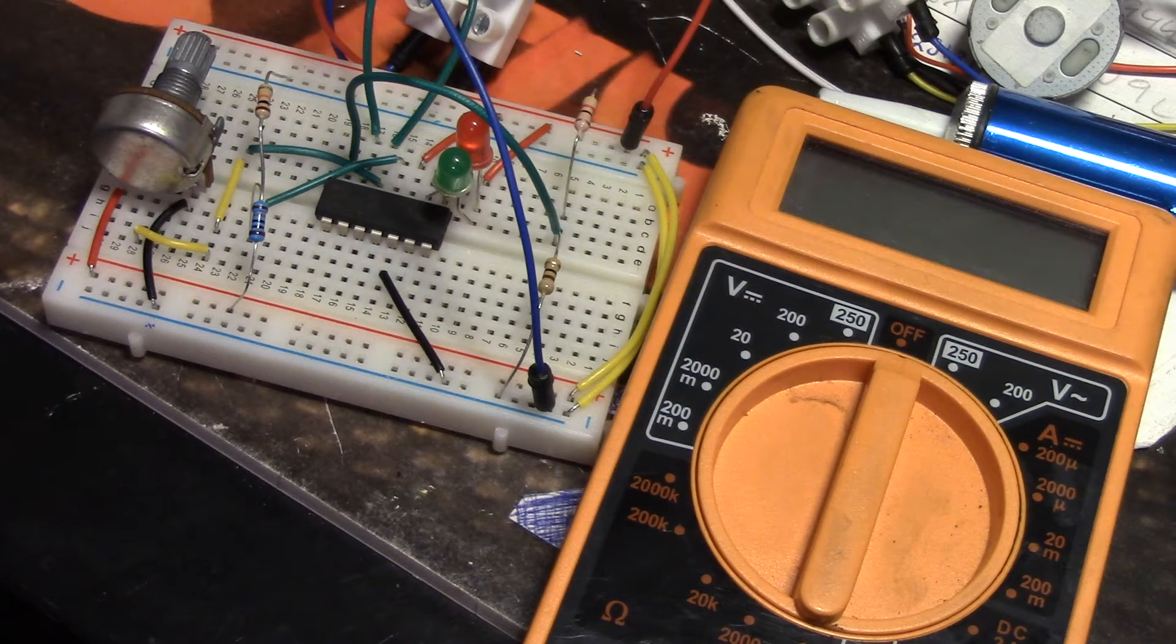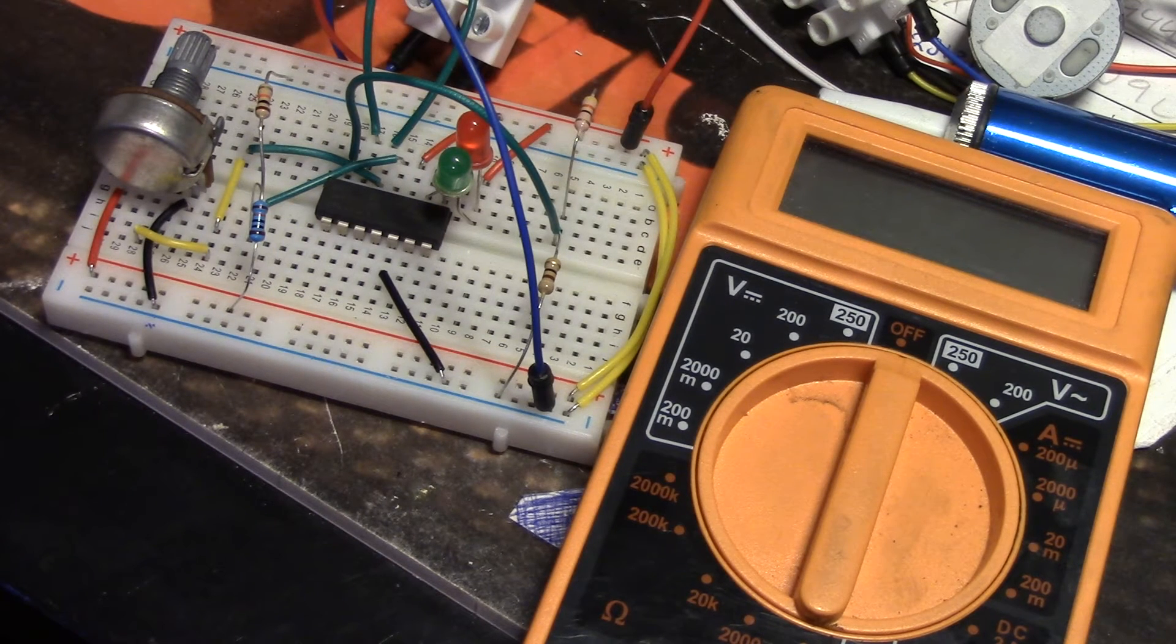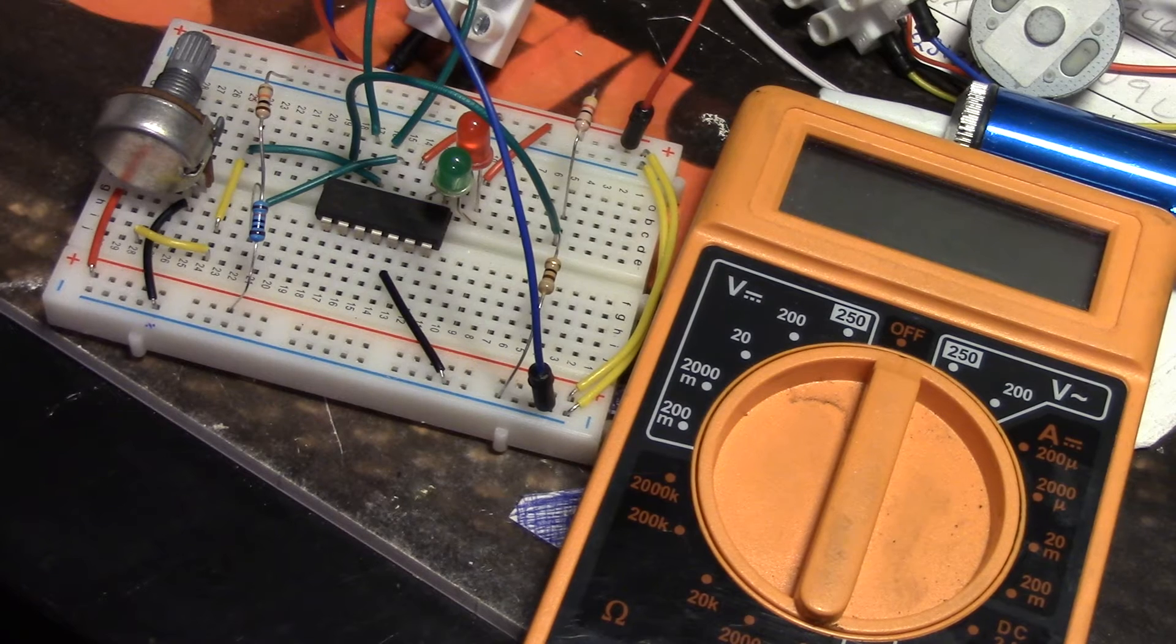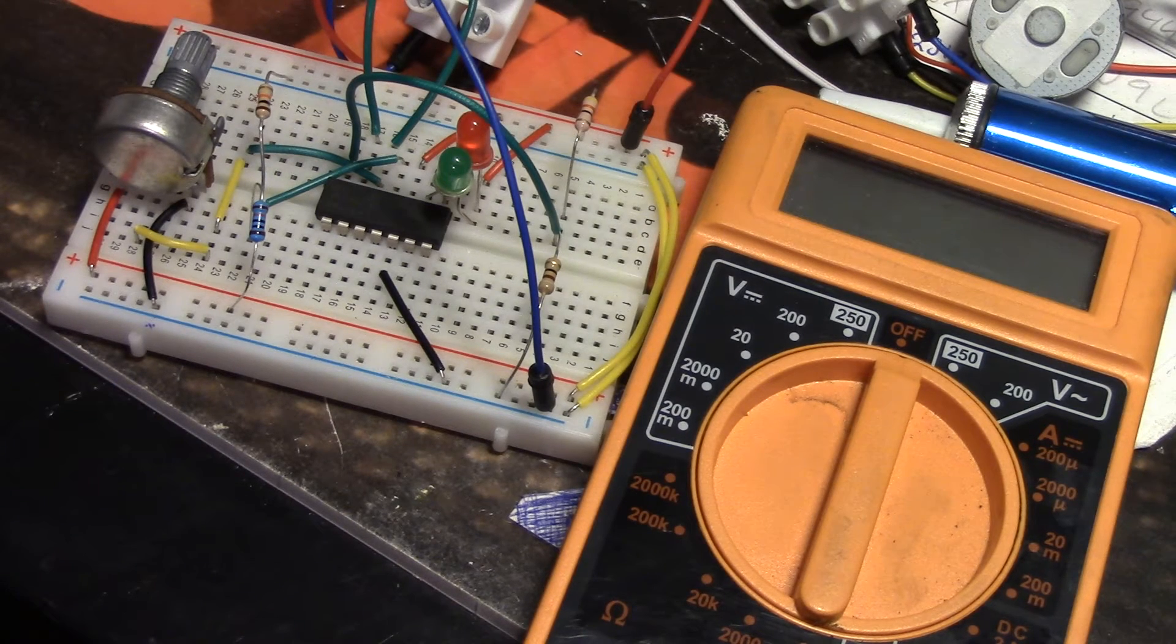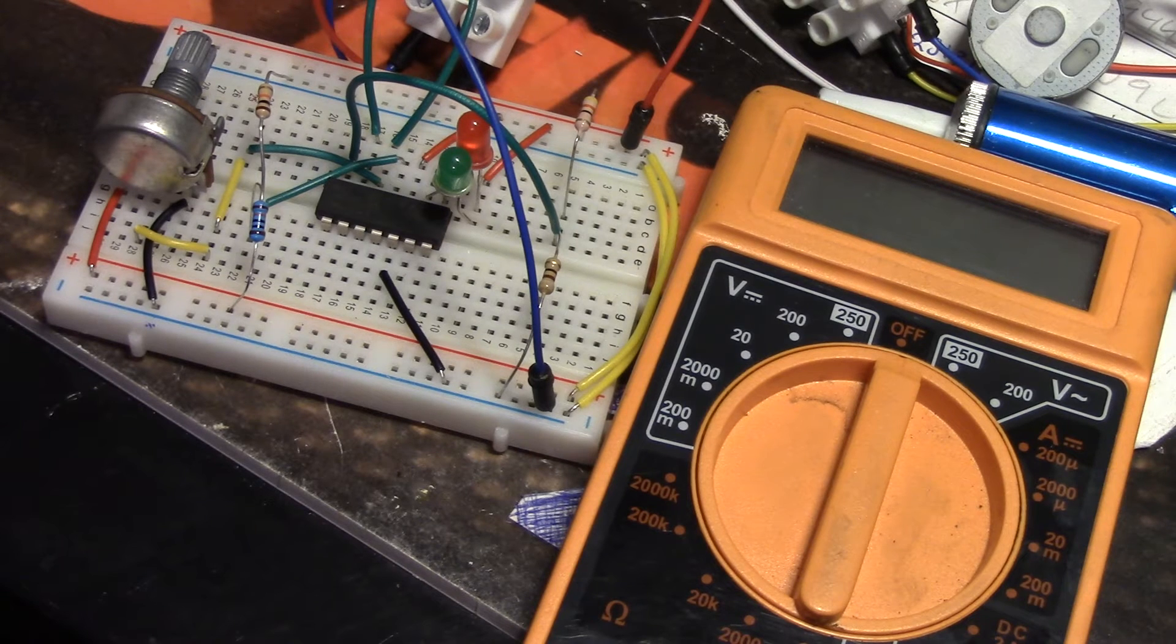Okay, so now we're going to take a look at the LM339, which is a 14-pin integrated circuit, and it's called a voltage comparer.